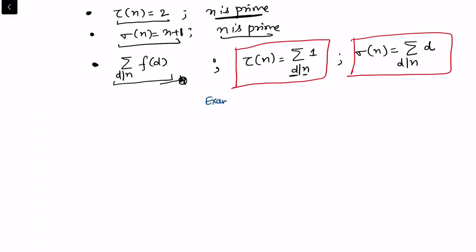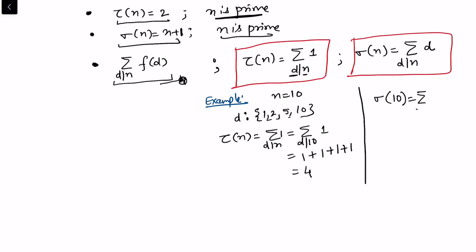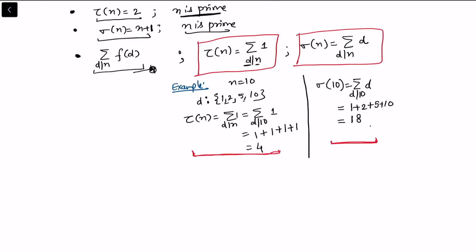For example, take n = 10. The divisors are 1, 2, 5, and 10. Then tau(10) = sum over d|10 of 1: when d=1,2,5,10 each contributes 1, giving tau(10)=4. For sigma(10) = sum over d|10 of d, running over divisors gives sigma(10)=18.